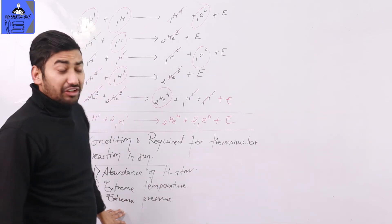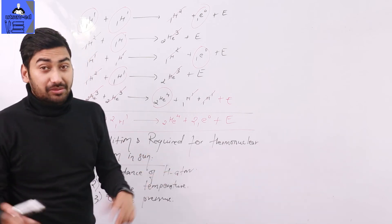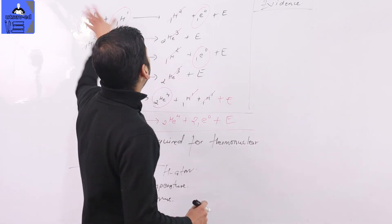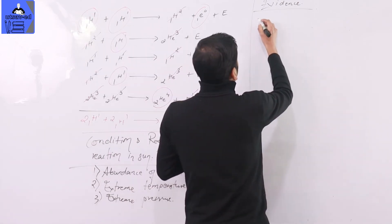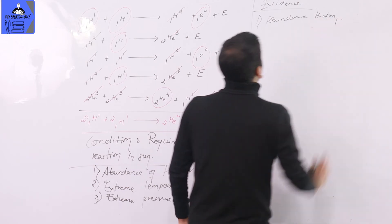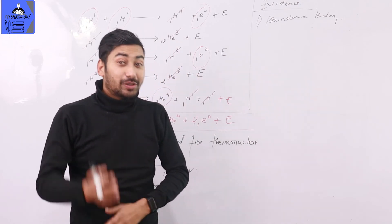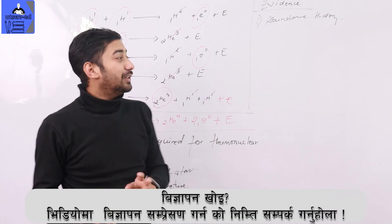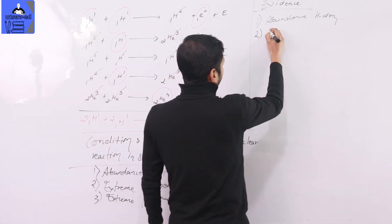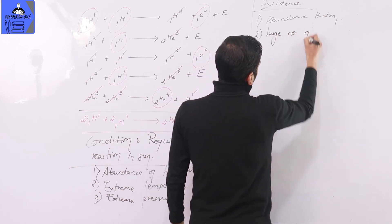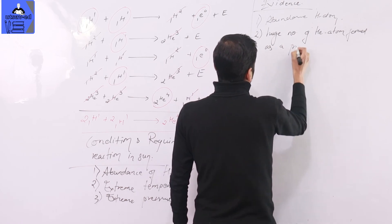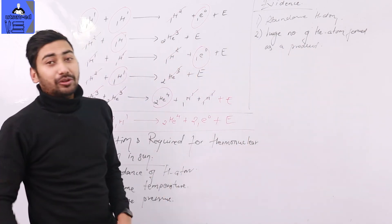What is the evidence that thermonuclear reactions are taking place in the Sun? The first evidence is that the Sun has a huge number of hydrogen atoms, which take part in the nuclear fusion reaction. The second evidence is the product: helium is the second largest element in the Sun after hydrogen. The huge amount of helium atoms formed is proof that the thermonuclear fusion reaction is occurring.